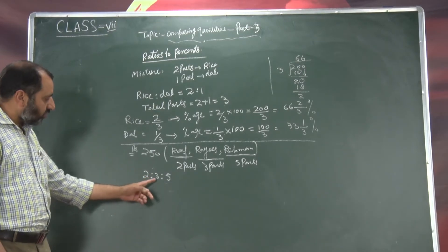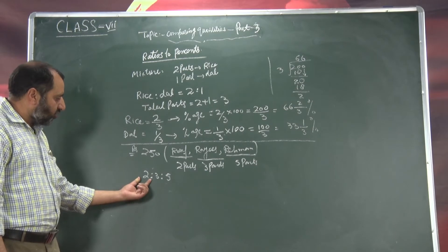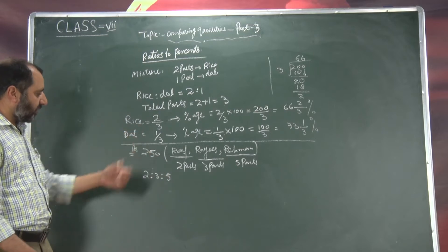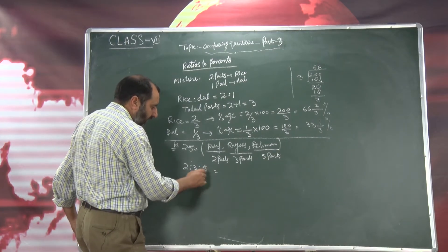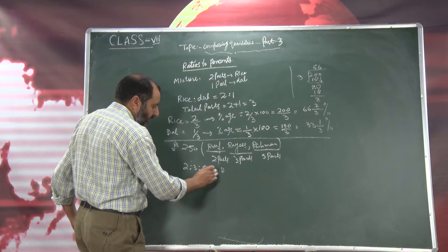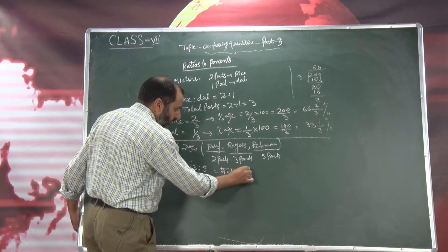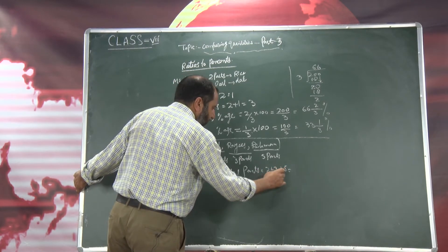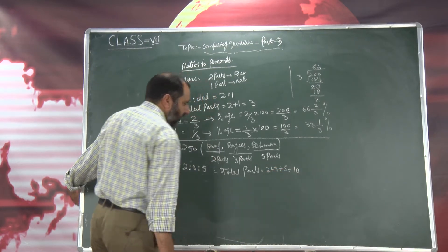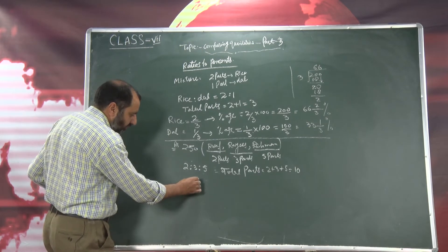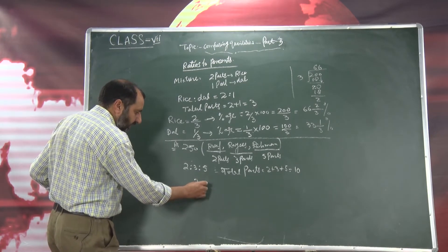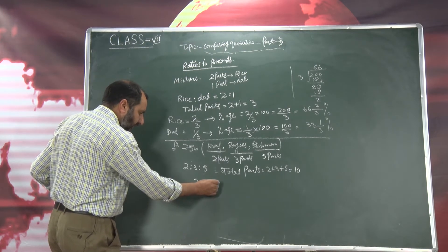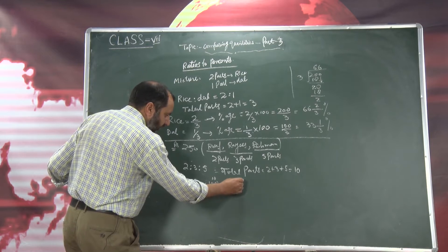Ab yeh ratio hum convert karingi into percent mein. Two is to three is to five means two parts, three parts, five parts. Pahle hum total parts nikalingi — total parts means two plus three plus five: five plus three is eight, eight plus two is ten. So total parts are ten. Now we have ratio 2 divided by 10 into 100 — 10 tens are 100, 2 tens are 20. This is 20 percent.